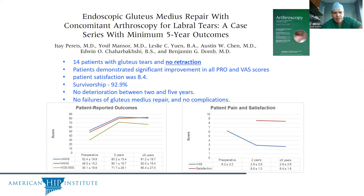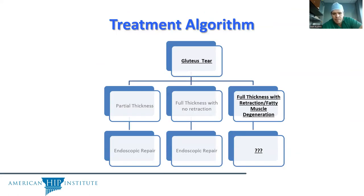Looking at outcomes further out — at five years rather than two — a study on 14 patients also showed durable results. There was no significant deterioration between two and five years, and there were no failures of the abductor repair. One patient did need to go on to total hip arthroplasty for arthritis, but there was no problem with the abductor repair itself. For partial thickness and full thickness tears without retraction, endoscopic repair is a really good option if you're equipped to do so.